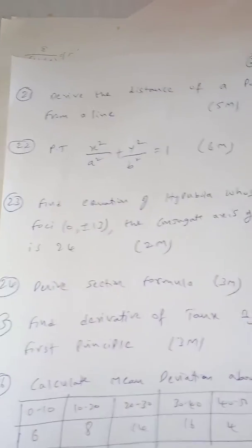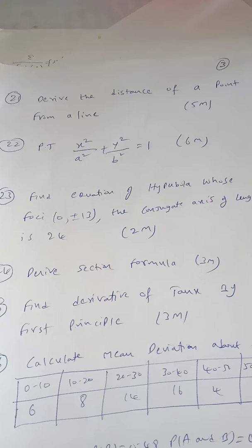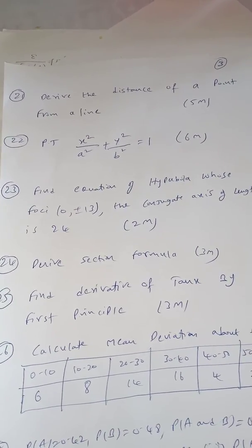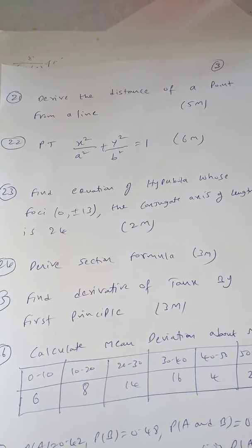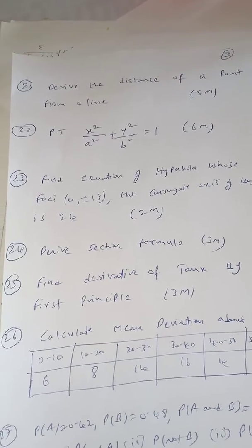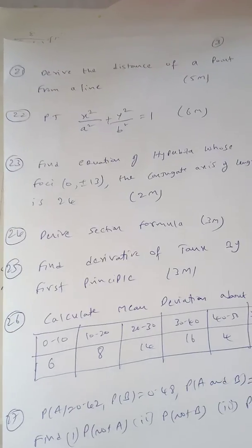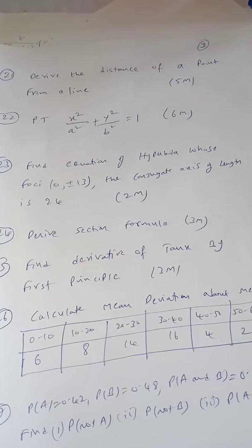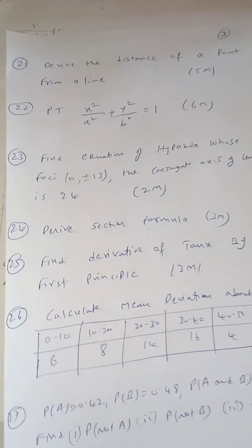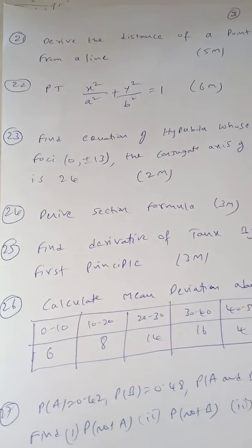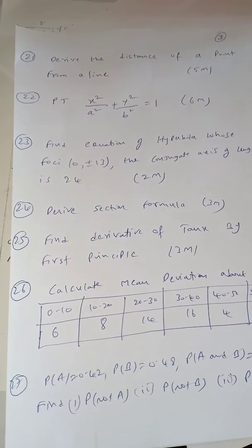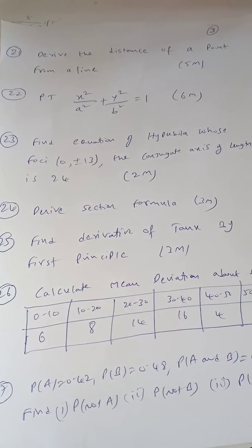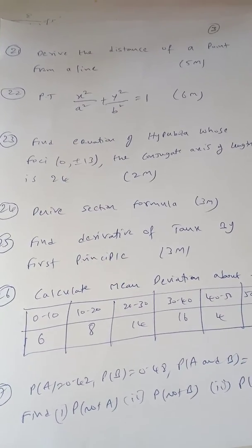Question 21, derive the distance of a point from a line. It is a 5 mark question straight line derivation. Question number 22, prove that x square by a square plus y square by b square equal to 1. This is the ellipse derivation, they will ask for 6 marks. Question 23, find the equation of hyperbola whose foci, the conjugate axis of length is 24 given. It is a 2 mark question. Question number 24, derive section formula, also for 3 marks. Question number 25, find derivative of tan x by first principle. Maybe sin x and cos x. Any out of these 3 they will ask. It is for 3 marks.